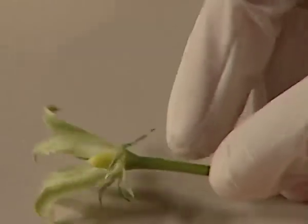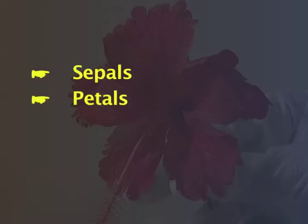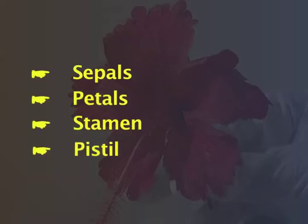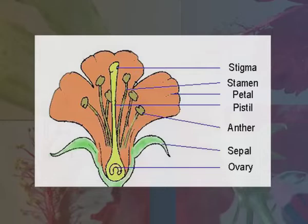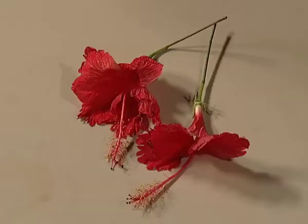Now we have learnt about the different structures of the flower: sepals, petals, stamen, and pistil. Can you do the same with a flower? But remember, do not pluck the flower — use a fallen one.